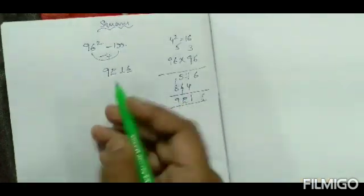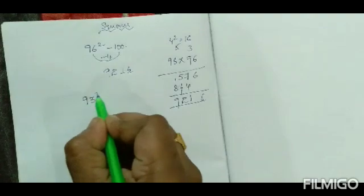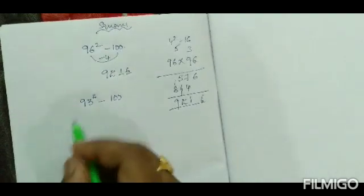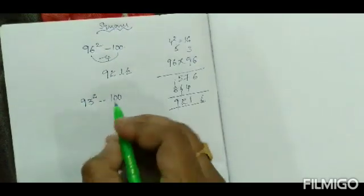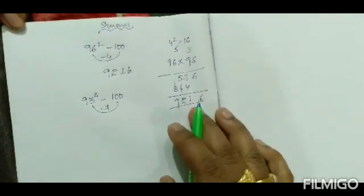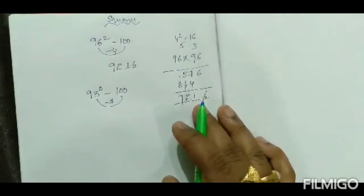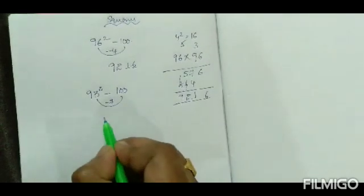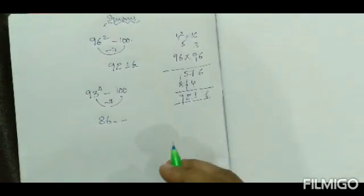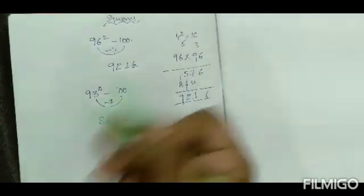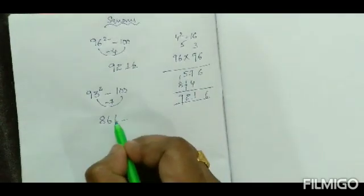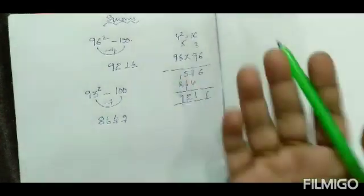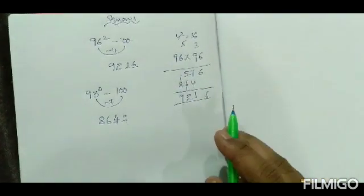Let us take another number — 93 squared. This is also nearest to 100. The difference between 93 and 100 is 7, and 7 is less than 100. So we subtract 7 from 93: 93 minus 7 equals 86 — that is step number 1. Then 7 squared is 49, so we write 49. Therefore 93 squared equals 8649. You can cross-check by computing 93 × 93.